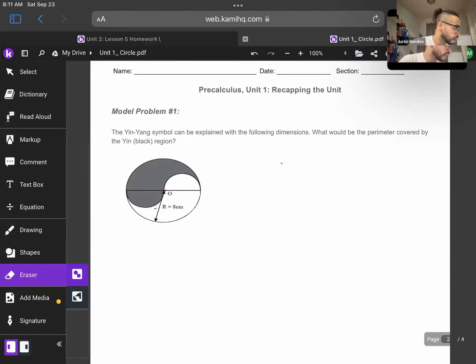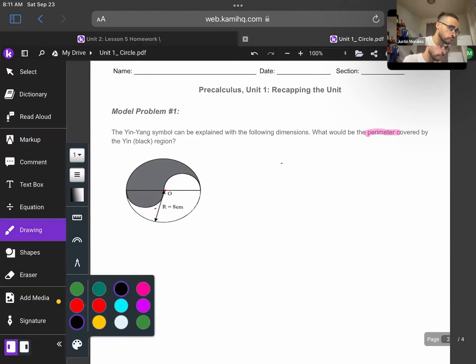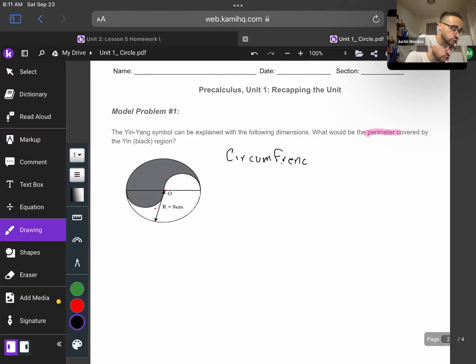The yin-yang symbol can be explained with the following dimensions. What can be the perimeter covered by the yin black region? So when I hear the word perimeter, I'm automatically drawn to the word circumference. So I know that is going to be the formula I need. So I'm going to go ahead and write that out for myself right away. And the formula for circumference is 2πr.